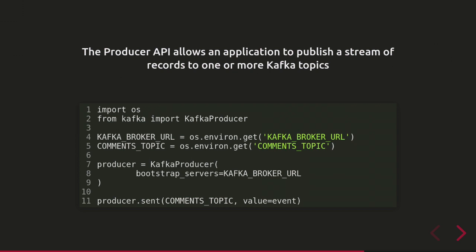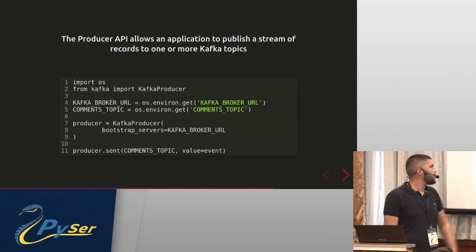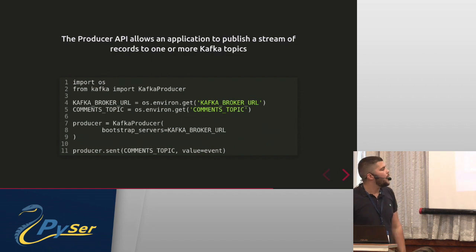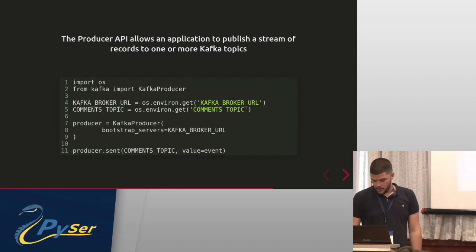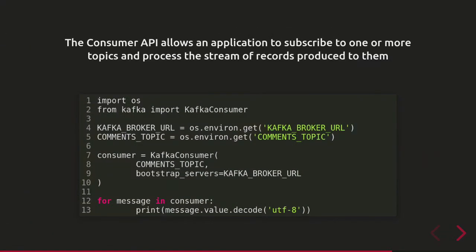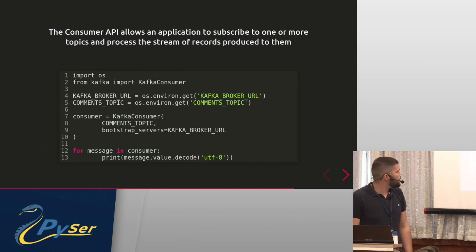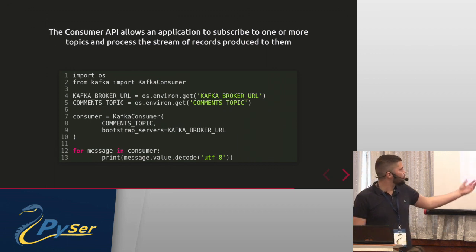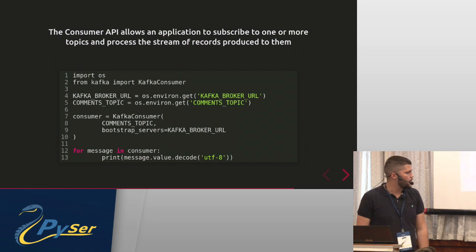In Python, Kafka consists of a Producer API and a Consumer API. The Producer API allows applications to publish a stream of records to one or more topics. We instantiate a Kafka producer, connect to the Kafka cluster, and send events. The first parameter of the `send` method is the topic, and the `value` parameter takes the event. The Consumer API allows applications to subscribe to topics and ingest data — you can iterate through the consumer and print every received message.